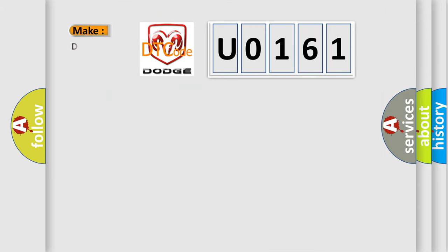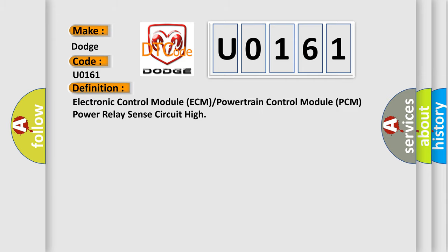So, what does the diagnostic trouble code U0161 interpret specifically for Dodge car manufacturers? The basic definition is: Electronic Control Module (ECM) or Powertrain Control Module (PCM) power relay synth circuit high. And now this is a short description of this DTC code.